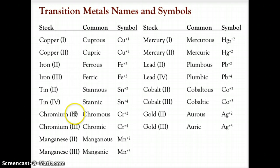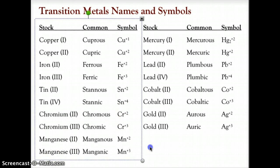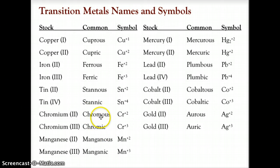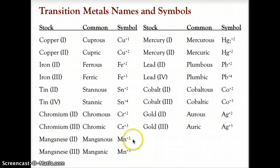Chromium comes in two varieties — plus-two and plus-three. Chromium(III) is chromic, and chromium(II) is chromous. We also have manganese(II) and manganese(III): manganous is Mn²⁺, and manganic is Mn³⁺.